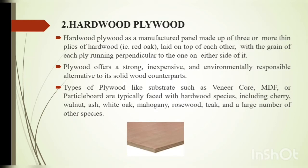Hardwood plywood. Hardwood plywood is a manufactured panel made up of three or more thin plies of wood. Plywood offers a strong, inexpensive and environmentally responsible alternative. Types of plywood substrates such as veneer core, MDF that is medium density fiber board, or particle board, are typically faced with hardwood species including cherry, ash, white oak, etc.